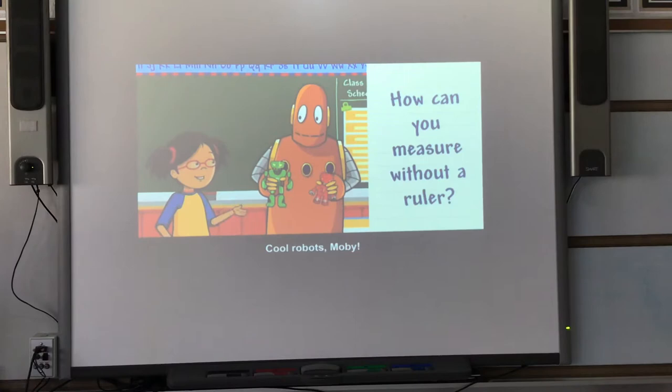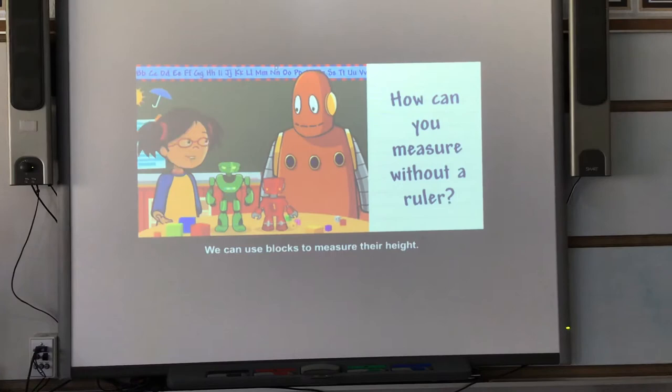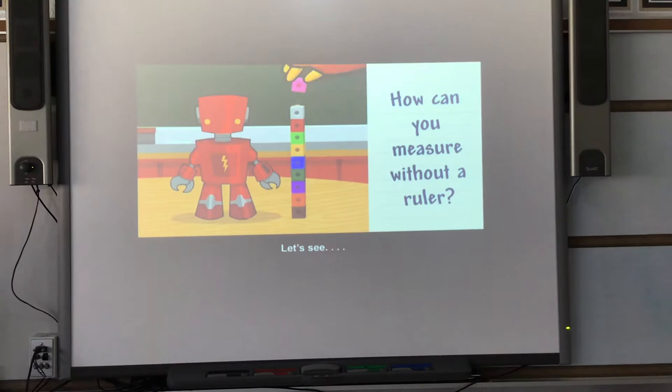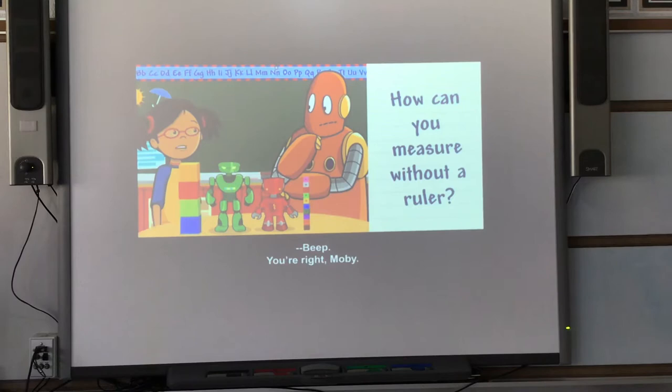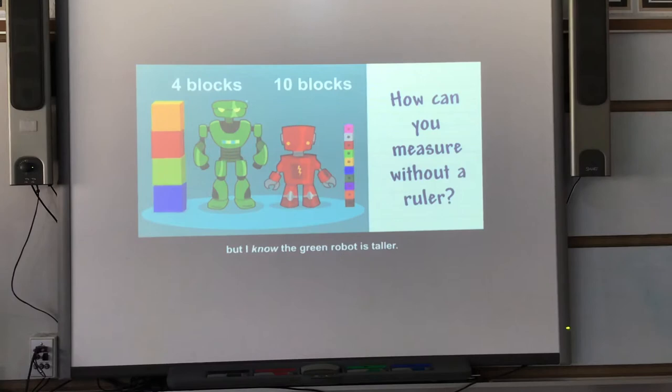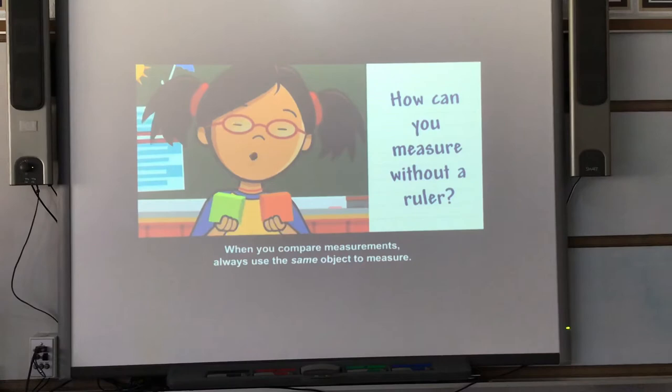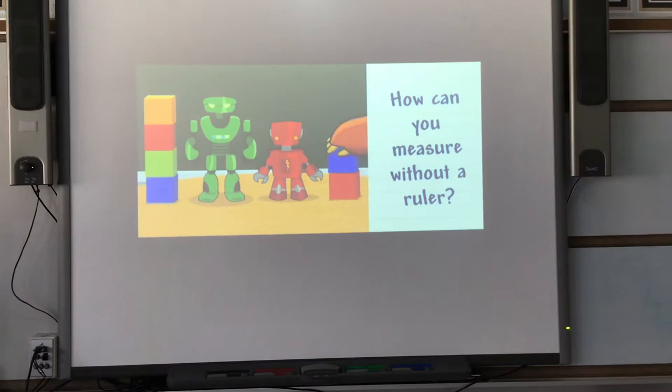How tall are the robots? We can use blocks to measure their height. The green robot is four blocks tall. The red robot is ten blocks tall. It seems like the red robot is taller because the number is bigger, but the green robot is actually taller. Since the blocks used to measure are different sizes, it's hard to compare the measurements. When you compare measurements, always use the same object to measure. Using the same blocks: the green robot is four blocks tall and the red robot is three blocks tall.